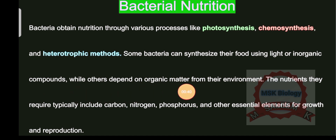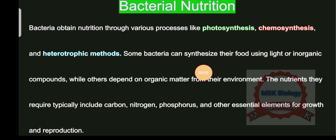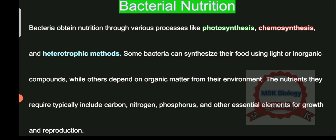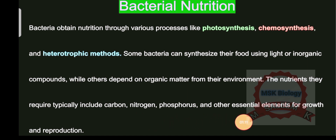Some bacteria use light energy or inorganic compounds, like in the case of saprotrophic bacteria which depend upon carbohydrates — organic matter present inside dead bodies. The nutrients bacteria require typically include carbon, nitrogen, phosphorus, and other essential elements, which are very essential for growth and reproduction.